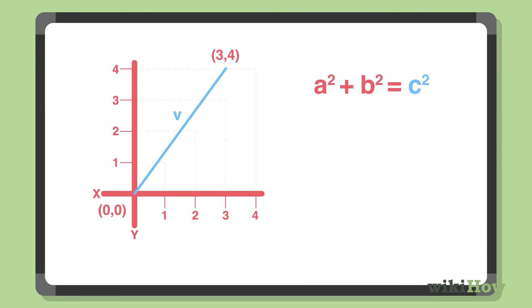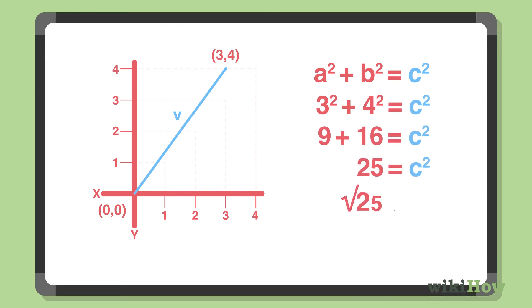In this case, we know that 3² + 4² = 25. Take the square root of 25 to get 5, the length of the vector.